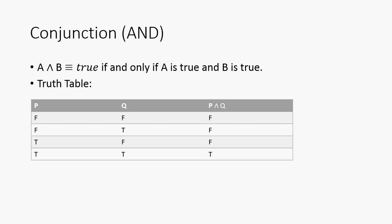As you can see here, in this column we have the values of P. In this column, we have the values of Q. And in this column, we have the values of P and Q. So, note that P and Q is true only when P is true and Q is true.